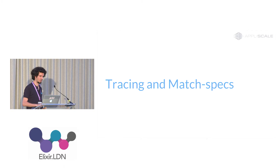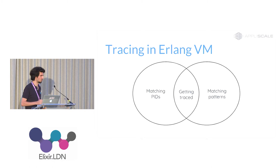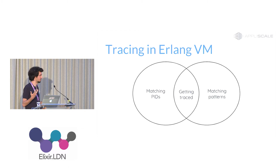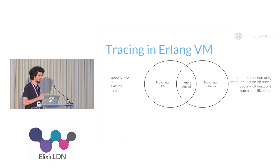Let's look at tracing. The Erlang VM has this great hidden feature which provides basic tooling for other tools to build upon. You can specify a set of processes and a set of functions to trace, and the intersection will get traced — meaning an Elixir message will be sent to a tracer process. You can specify one process, all processes, only existing processes, or only newly spawned processes. In the pattern part, you can specify module/function/arity or all functions from a module.